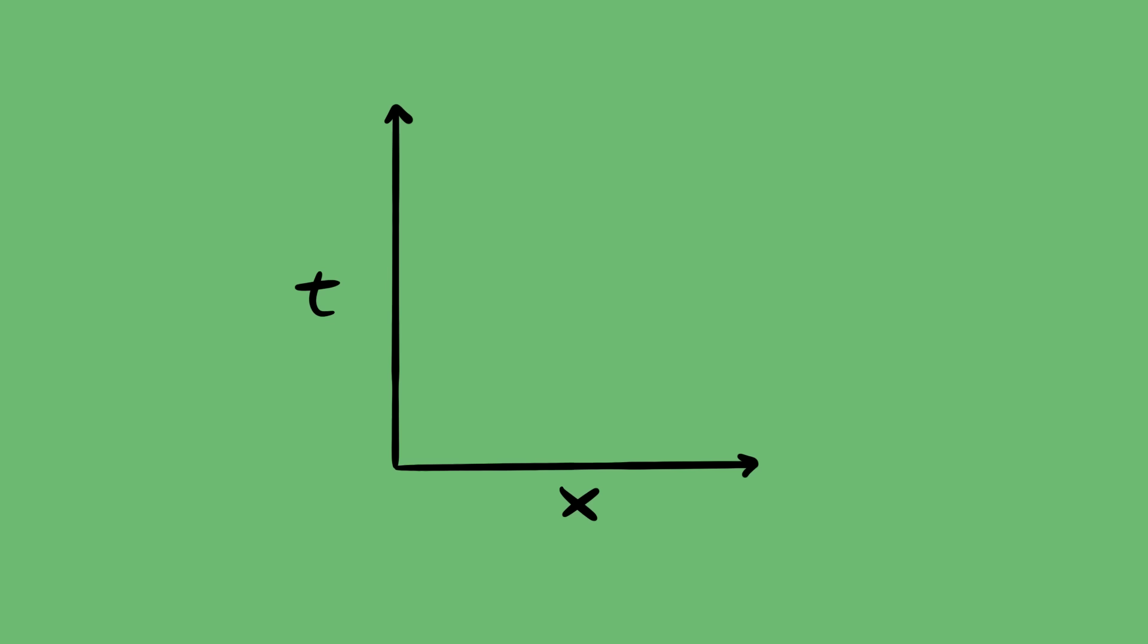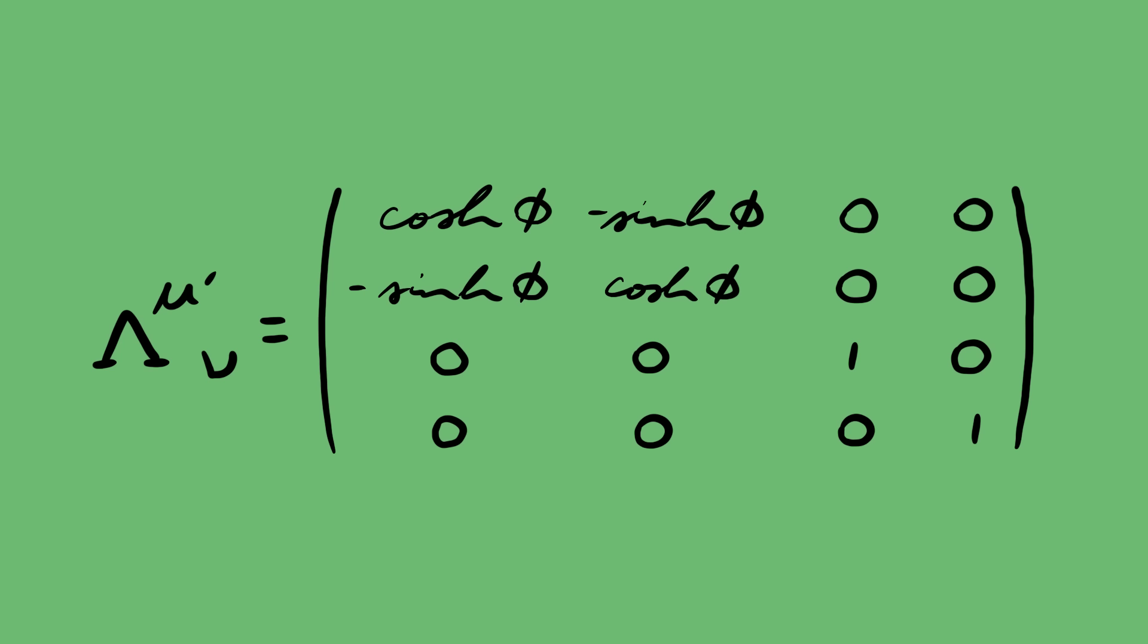A boost is a sort of rotation between time and spatial dimensions. But again, because of the negative sign in front of time, the math is a bit funny. What this really corresponds to is a moving observer.